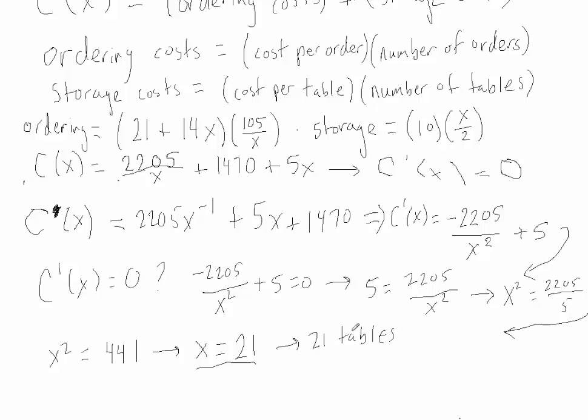And if we take our total tables, divide by tables per order, we'll get 5 orders. So, to minimize costs, we should place 5 orders per year, each of 21 tables.